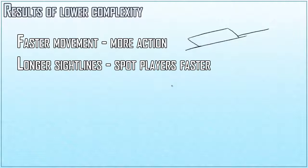There are also longer sightlines, which means you spot players faster. This is obviously dependent on the game - if you have a rail gun that does the same amount of damage regardless of distance, longer sightlines mean you'll shoot faster as well. But in Battlefield, sure there are snipers, but take something like Operation Locker - that map is small enough that snipers aren't really going to be the main part of your problem, and the other weapons don't really have the range to shoot that far.